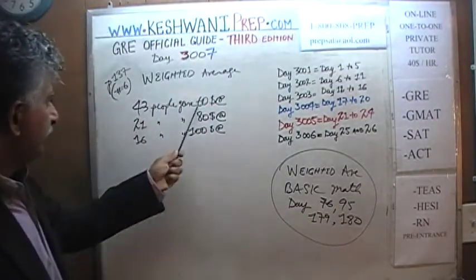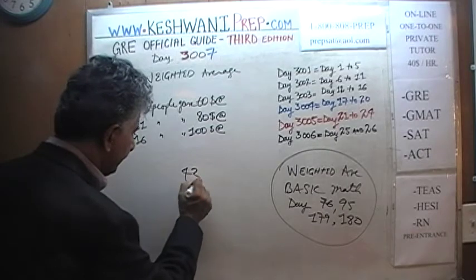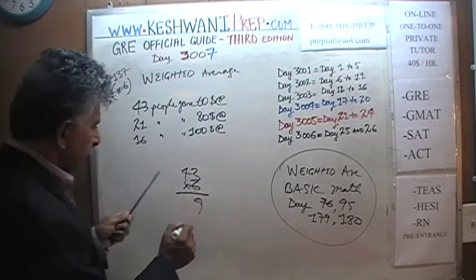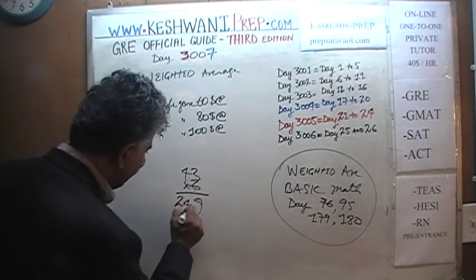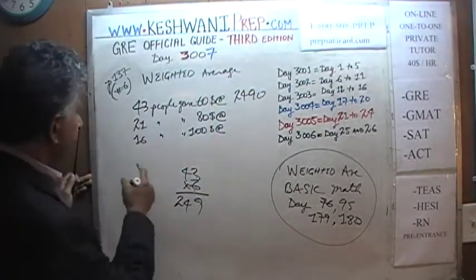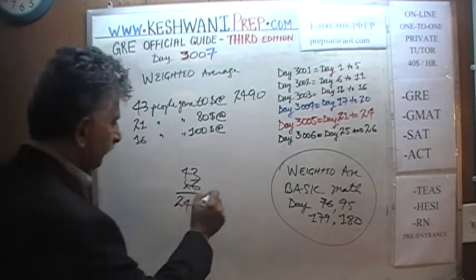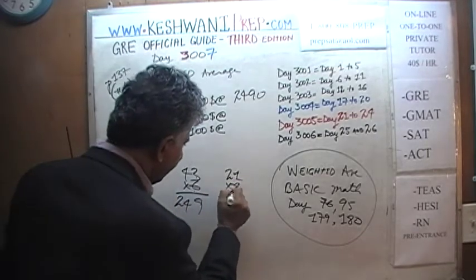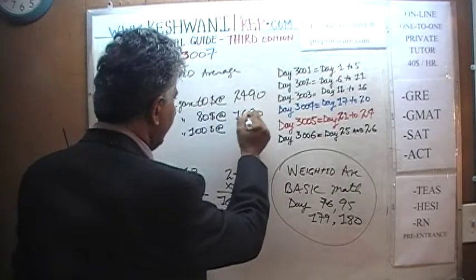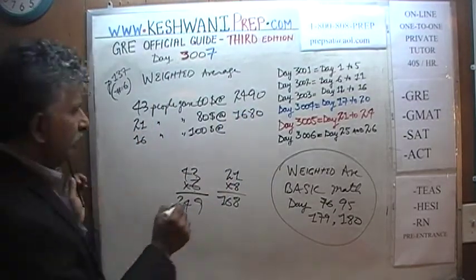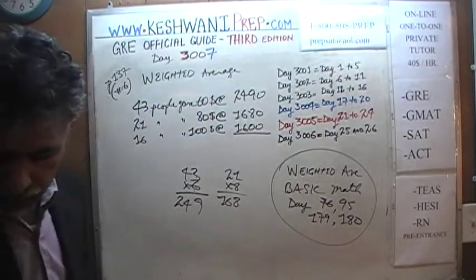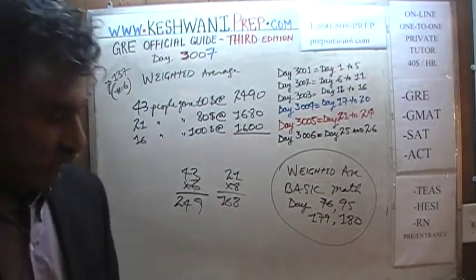Let's find out what 43 times 60 is. 43 times 60: 3 times 6 is 18, carry 1, 4 times 6 is 24 plus 1 is 25 — so it's 2,580. Let's find out what 21 times 80 is: 21 times 8 is 168, so it's 1,680. And 16 times 100 is just 1,600. So that part is done — let's find out the total contribution that was made.